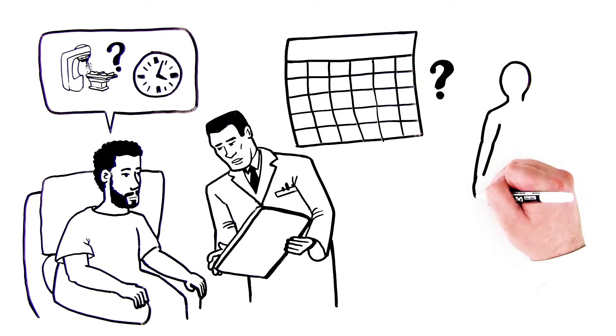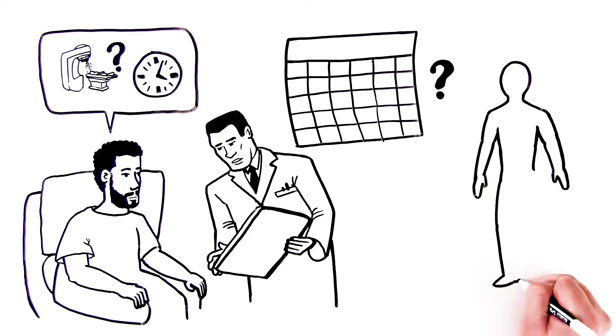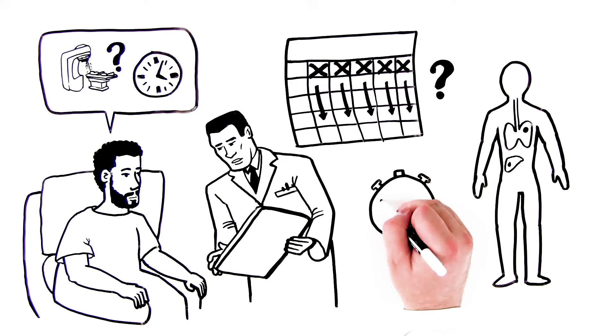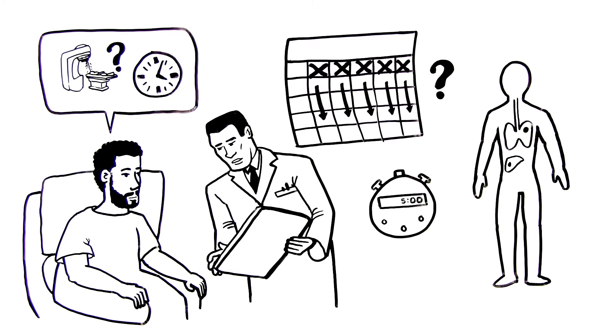How long your treatment lasts and how often you get treatment will depend on the type and stage of your cancer, the type of radiation you're getting, and how your body responds to it. For example, a patient might get radiation five times a week for several weeks. It usually takes just a few minutes each day once treatment has started.